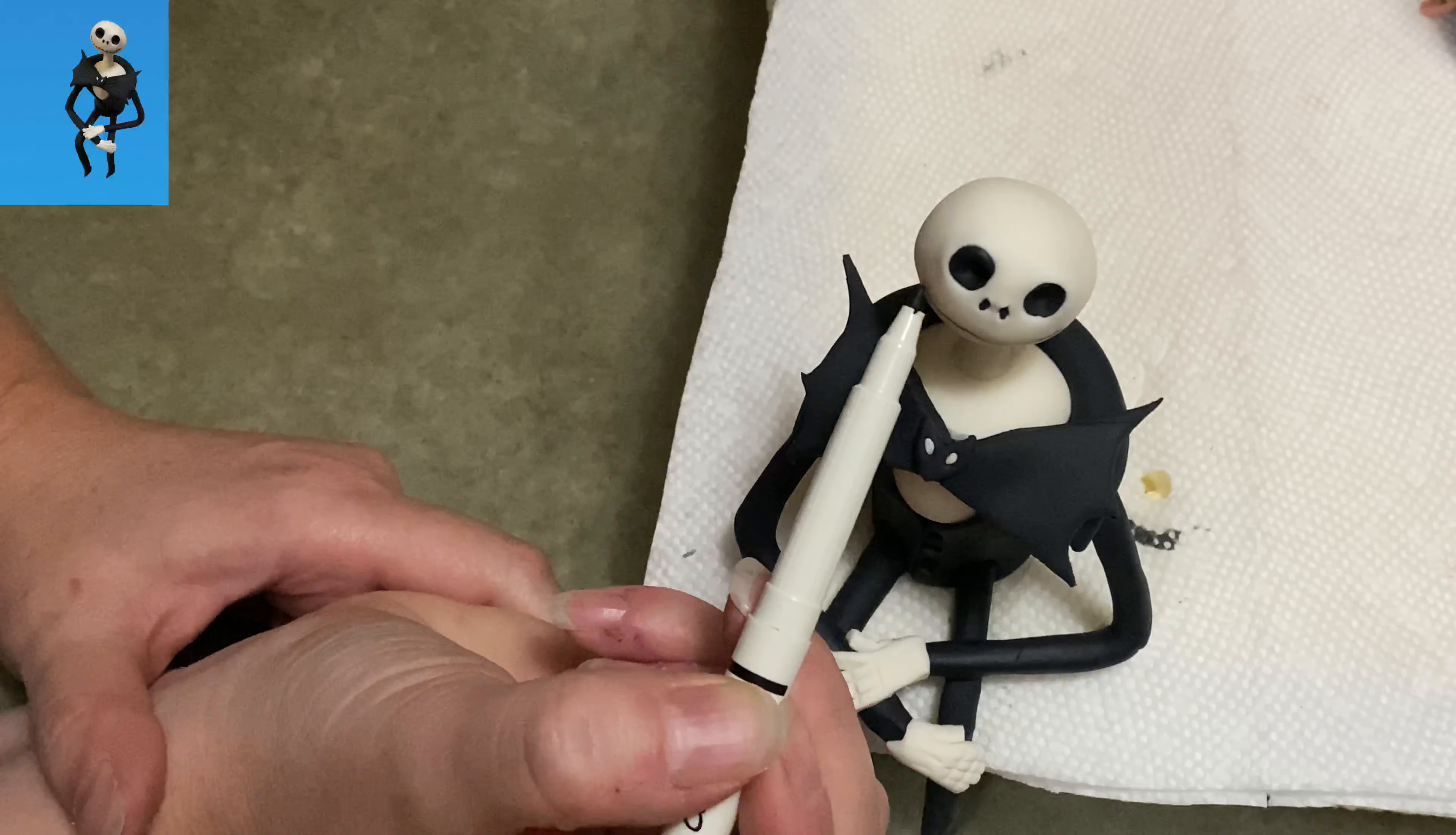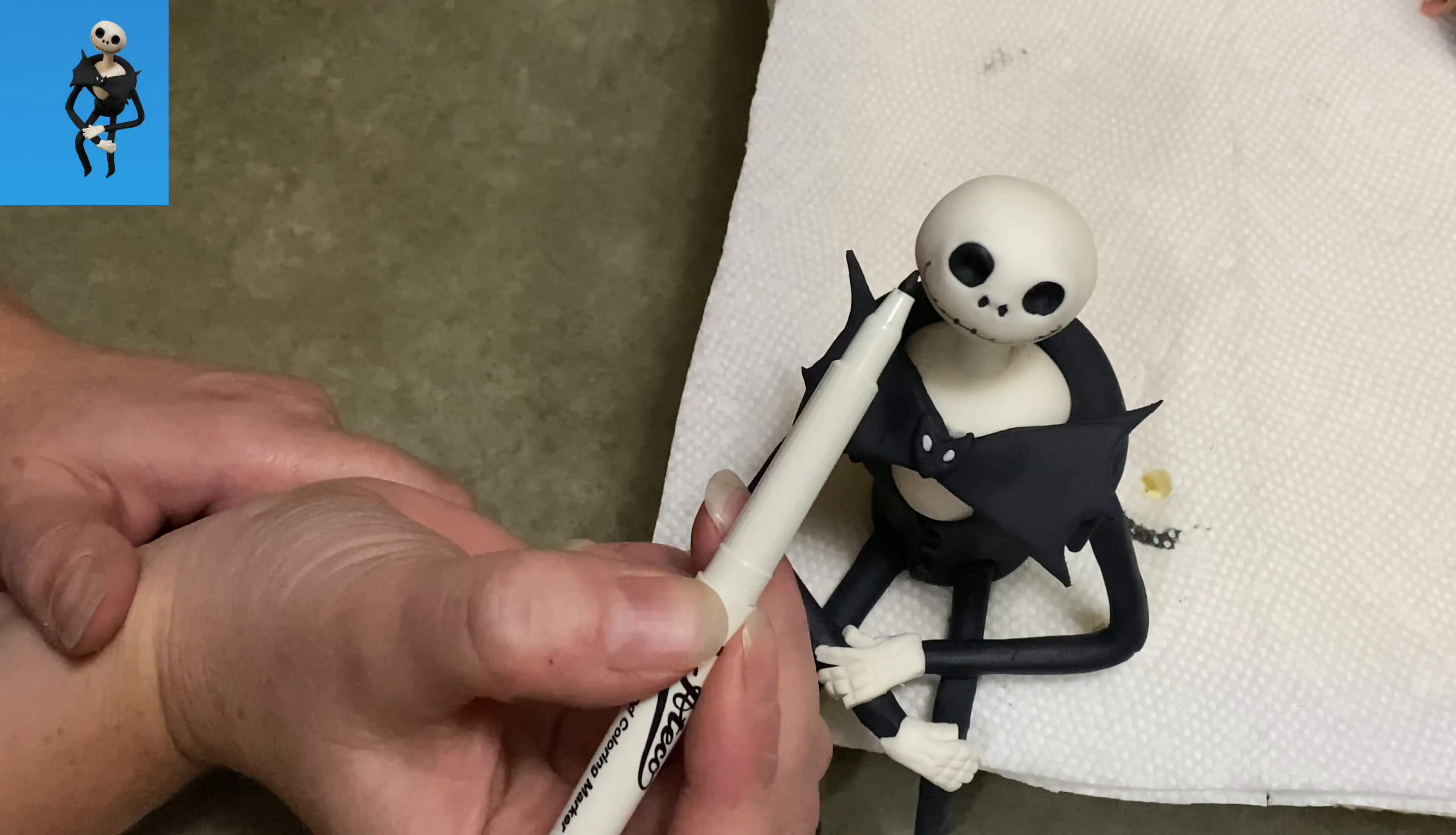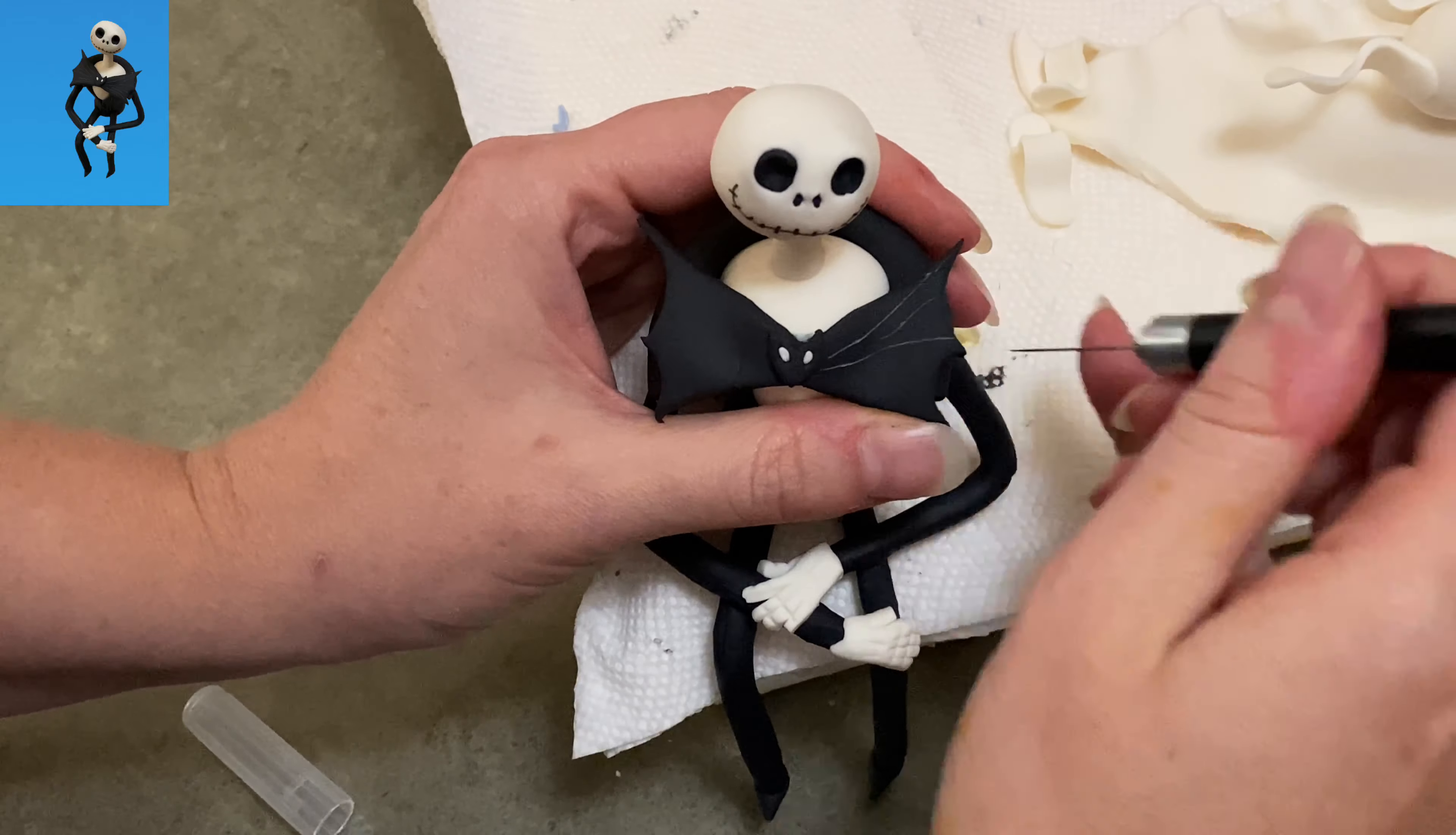And now I'm taking Edible Food Coloring Marker and I'm just drawing a big old smile on his face. It's just this really long line with a bunch of little lines going across it to mimic his kind of skeleton teeth. There you go. You see? And again, you want it to be a little wiggly, a little crooked because that's how he is.